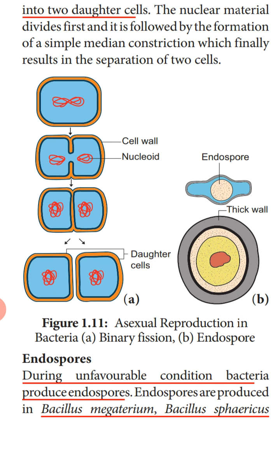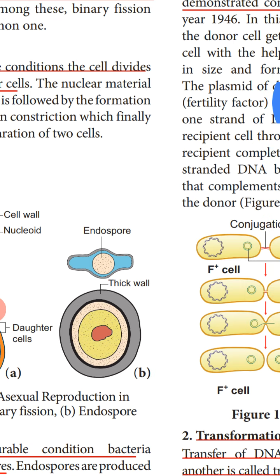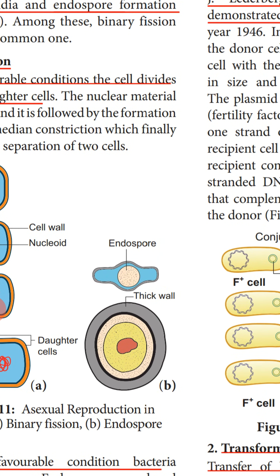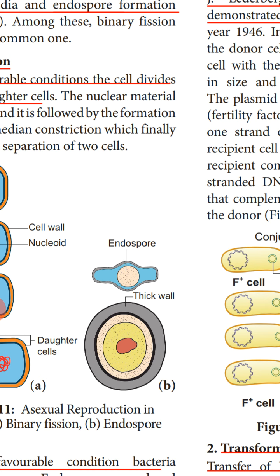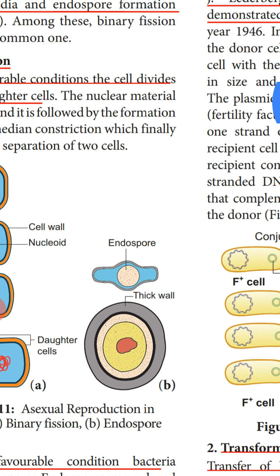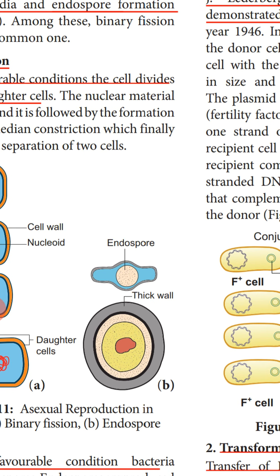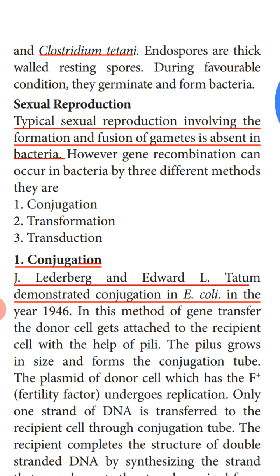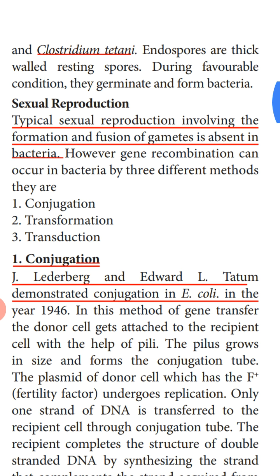During unfavorable conditions, bacteria produce endospores. Endospores are produced in some species like Bacillus. As seen in diagram B, inside the bacterial cell, during unfavorable conditions, the entire cell content will constrict and form a thick wall around itself. This structure is called an endospore. Endospores are also called resting spores.